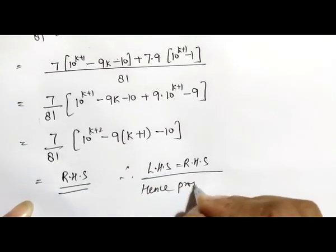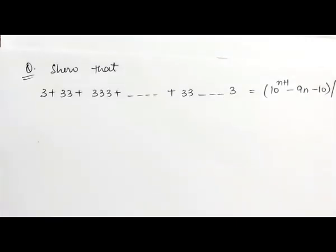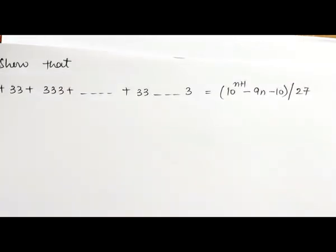We proved this equation using mathematical induction. This is a very important question in terms of university exams, semester exams, or minor tests. Now we are going to discuss the next question in the same manner. The question is: show that 3 + 33 + 333 + ... up to n terms equals (10^(n+1) - 9n - 10) / 27.